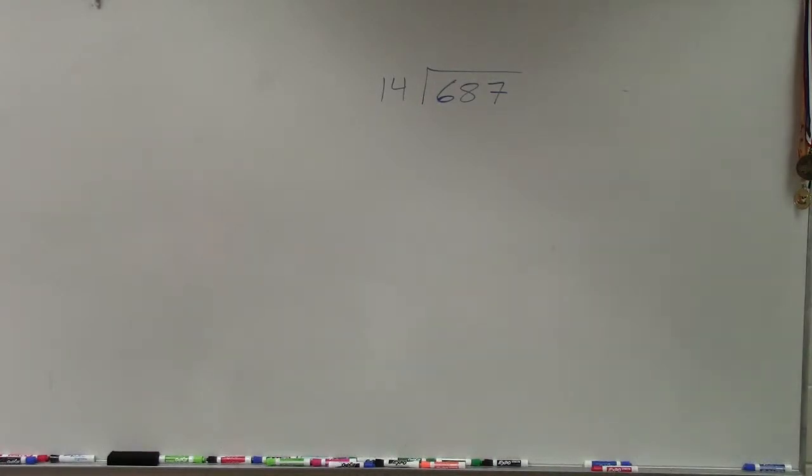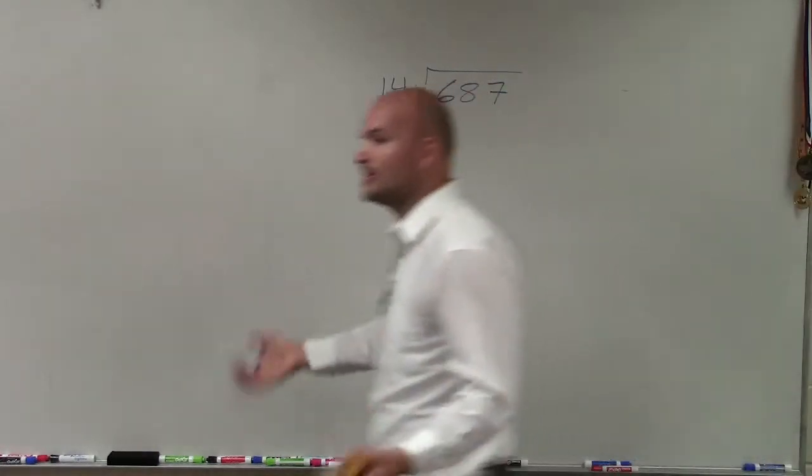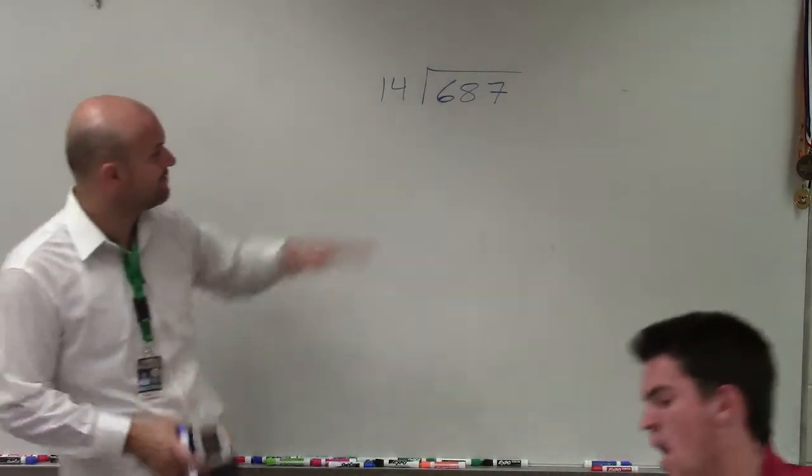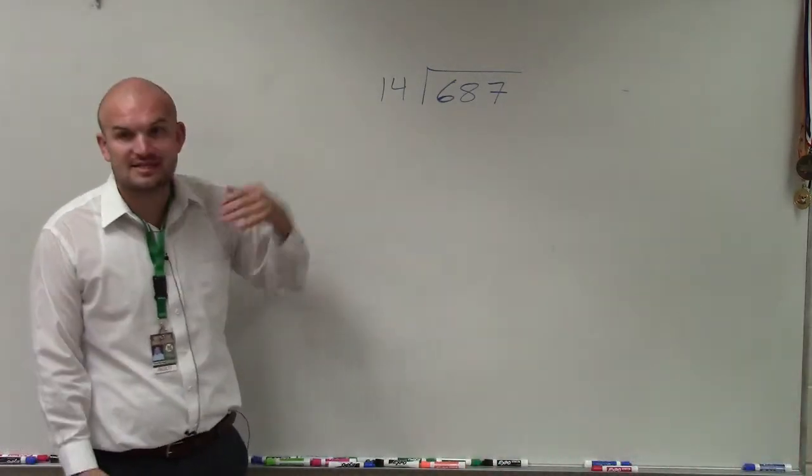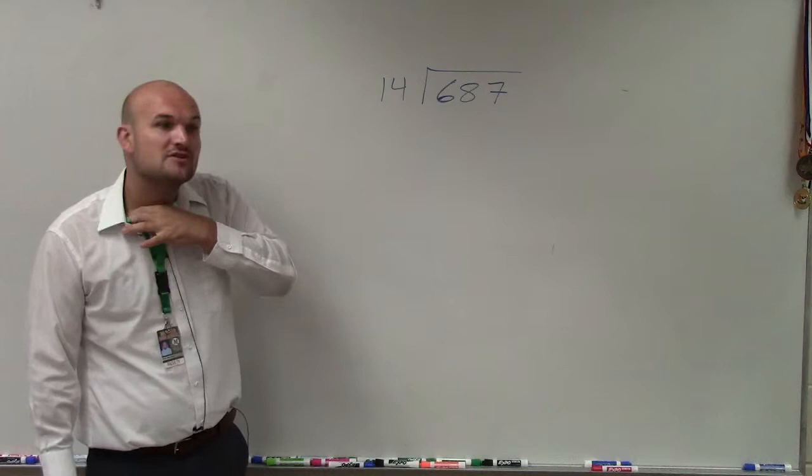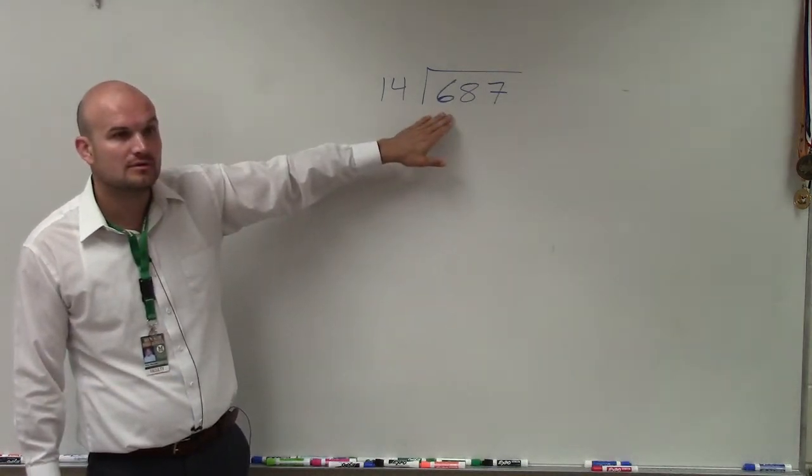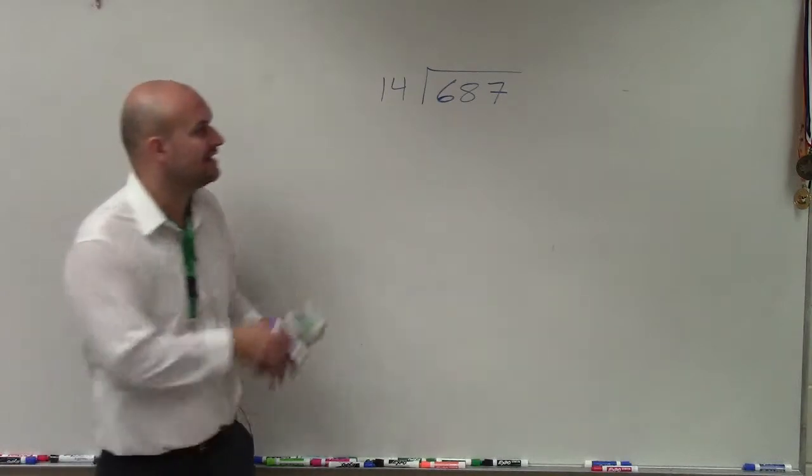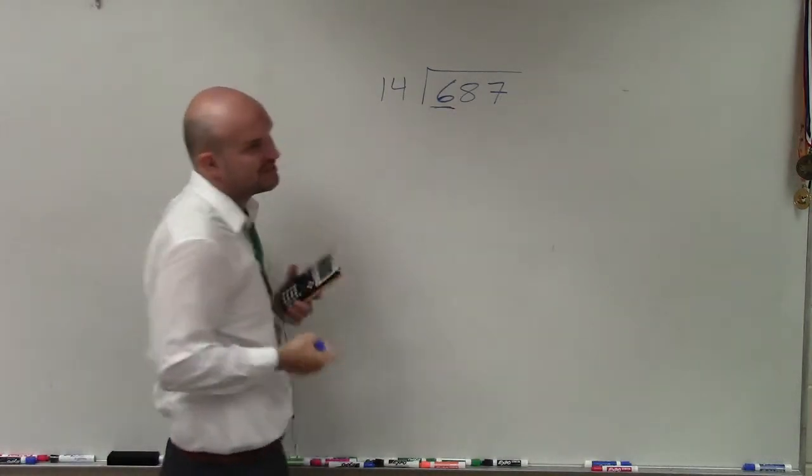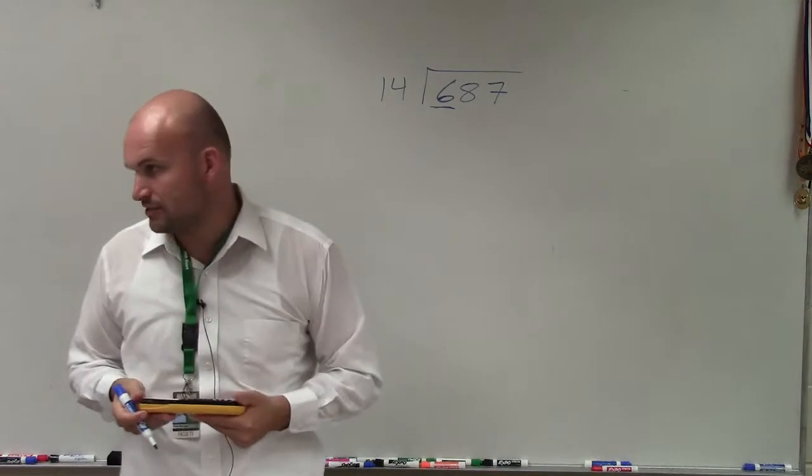So when we're looking into dividing numbers, the first thing we're going to do is what I have here is 14 divided into 687. The first thing we want to do when we're dividing numbers is try to divide into our first digit here. Well, 14 is larger than 6, so 14 is not going to divide into 6, correct?